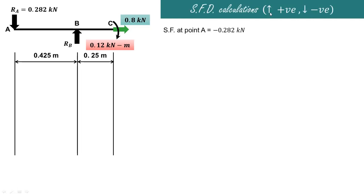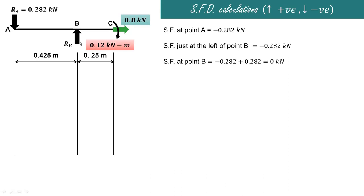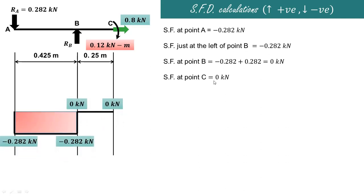The convention used is upward positive and downward negative. At point A there is a downward acting force of 0.282 kN, so the shear force is minus 0.282 kN. There is no other force acting between A and B, so the shear force remains minus 0.282 kN up to just left of B. Exactly at B, the upward reaction RB gives minus 0.282 plus 0.282 equals zero. From B to C the shear force also remains zero.